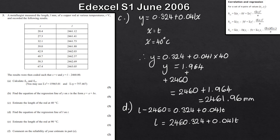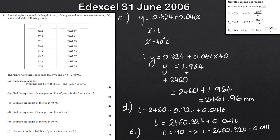For part e, we want to estimate the length of the rod at 90 degrees Celsius. We substitute t equals 90 into our regression line: l equals 2,460.324 plus 0.041 times 90. Putting that into the calculator gives l equals 2,464.01 millimetres.